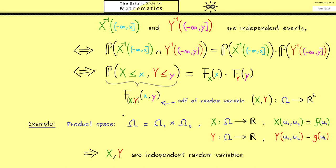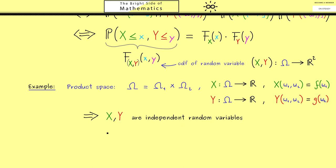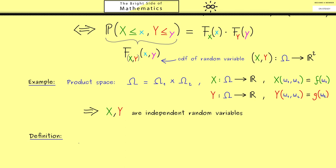Now when you see this product space here, you might remember that we also have a product space with infinitely many components. Therefore, the notion of independence for infinitely many random variables might also be useful. Indeed, this will be the last definition for this video.